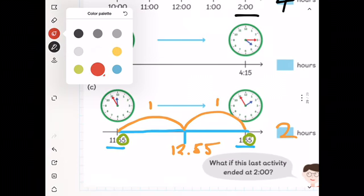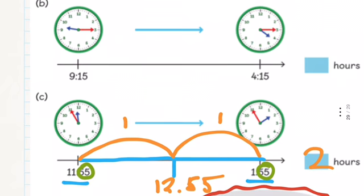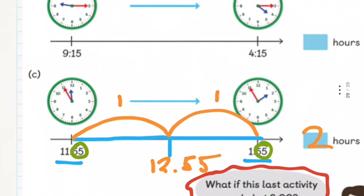However, we've got an extra question here, which is saying, what if the last activity ended at two o'clock? I wonder what that would make the time in hours. Would it be the same number of hours? Would it be slightly different minutes, perhaps? Have a see if you can answer that question.